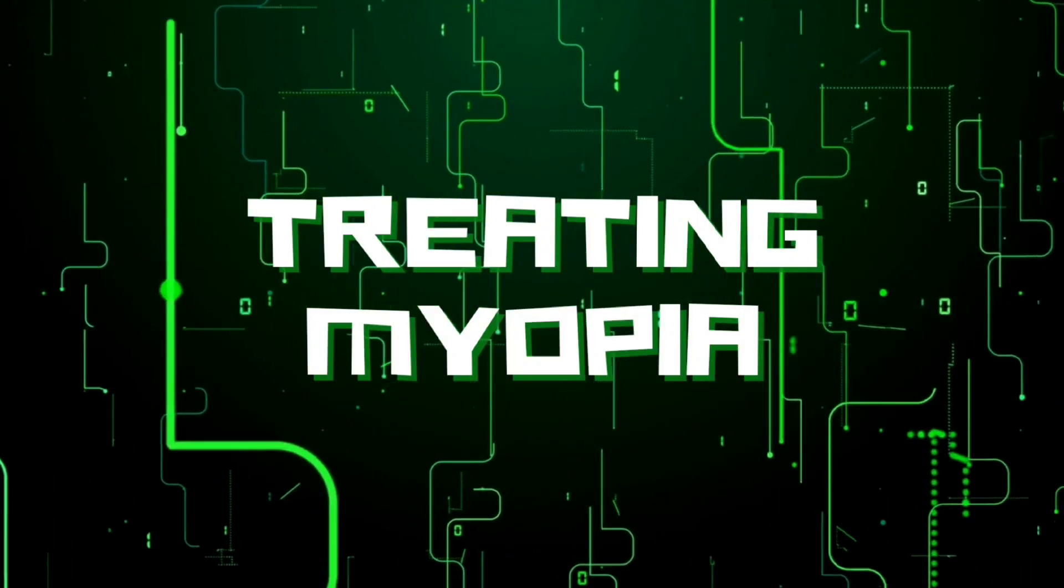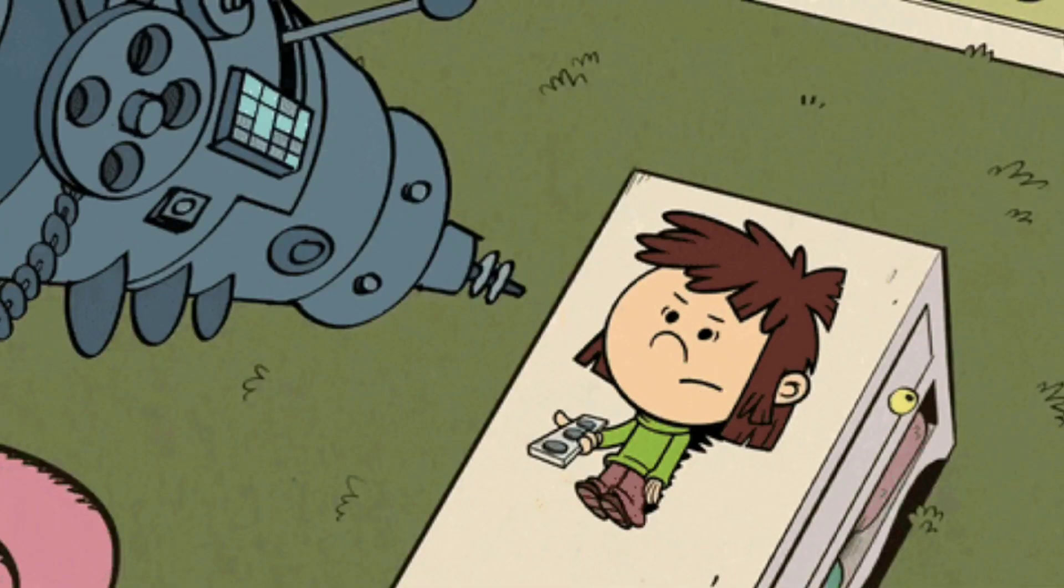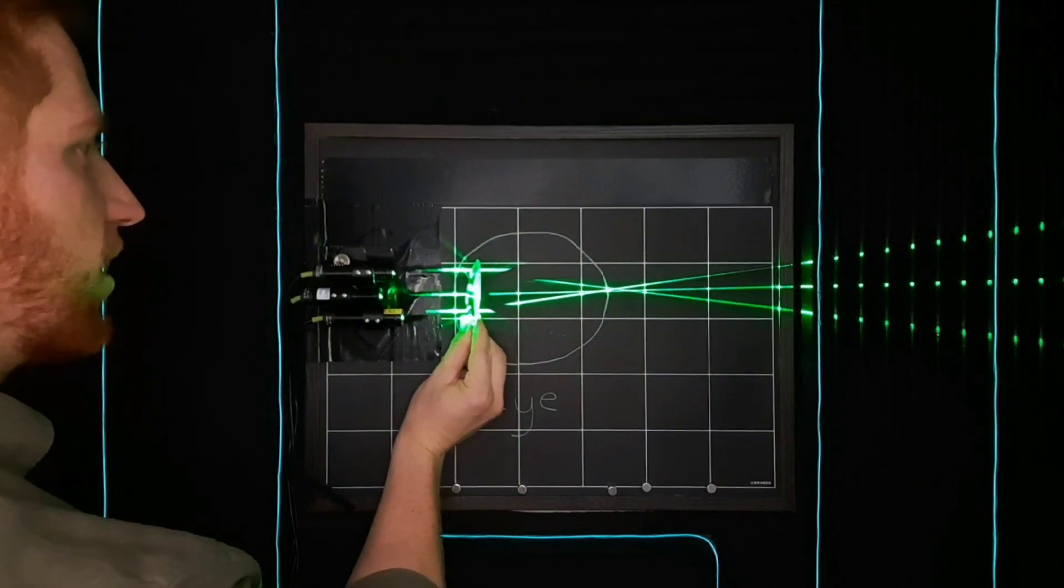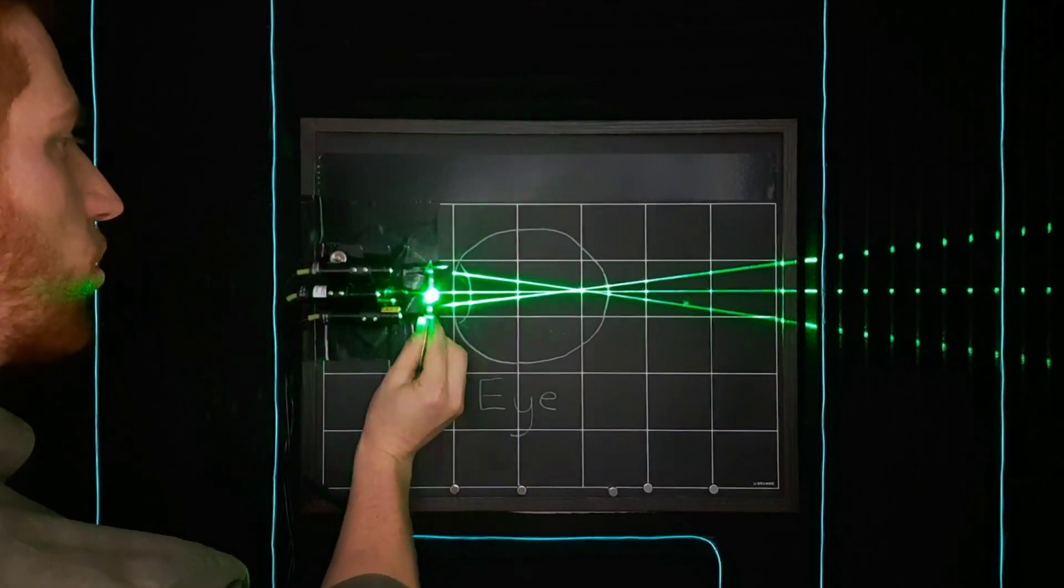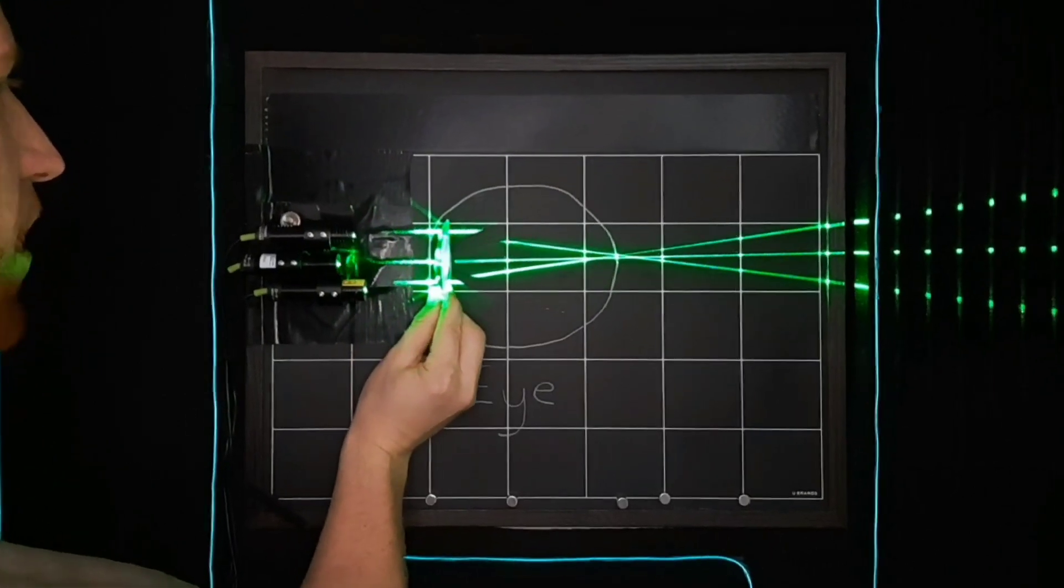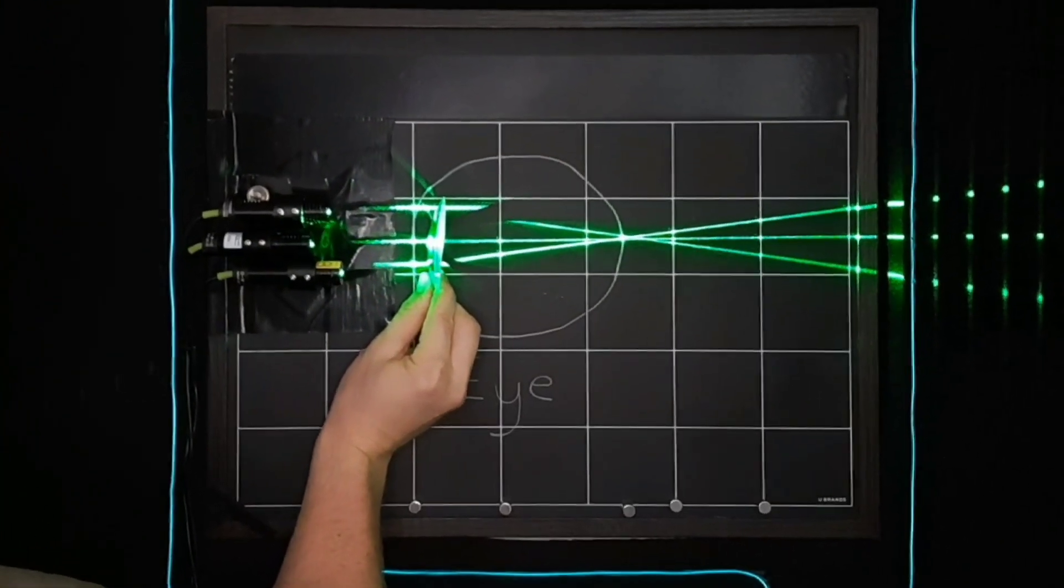But what can you do about nearsightedness? Thankfully, you can address this with glasses, contacts, or eye surgery. Because your eye is focusing that light too soon, the whole goal of corrective glasses or surgery is to push back that point of focus back onto the retina.